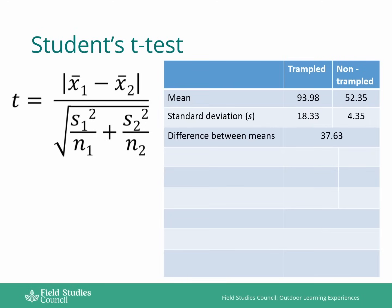You can see here that I've calculated the difference between the means. So 93.98 minus 52.35 gives us 37.63. This is the difference between the means and this is the top line of our equation.